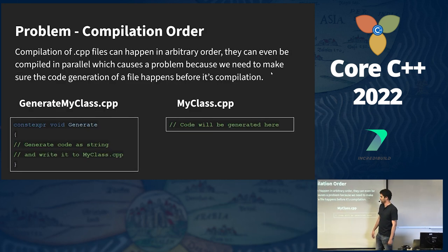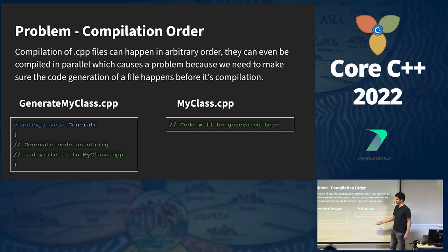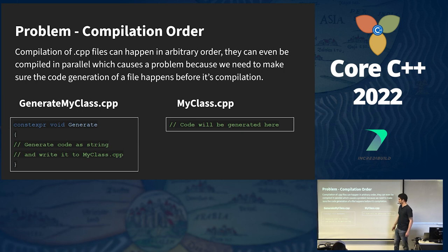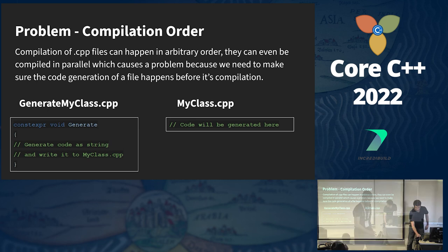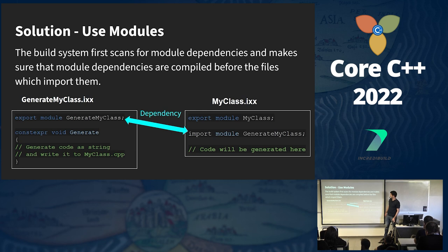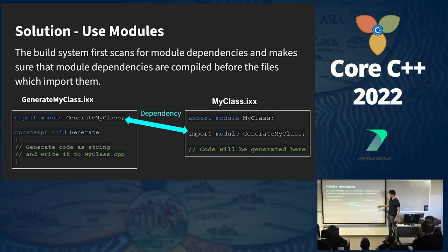We have a problem because of compilation order. If we have two files — generateMyClass and MyClass — where generateMyClass writes generated code into MyClass during compilation, MyClass might be compiled before the generated code is written to it. Files can even be compiled in parallel. We can solve this using modules: the build system scans for module dependencies, creates a dependency graph, and ensures module dependencies are compiled before the files that import them. So if generateMyClass exports a module and MyClass imports it, this dependency ensures MyClass is compiled only after the generated code is written — solving the problem.